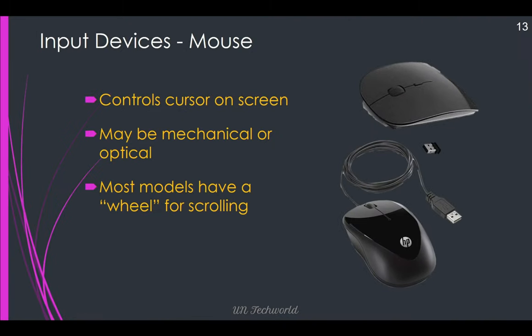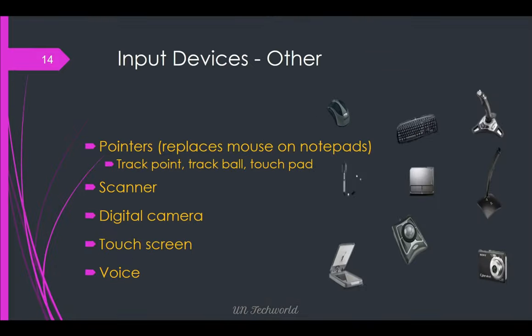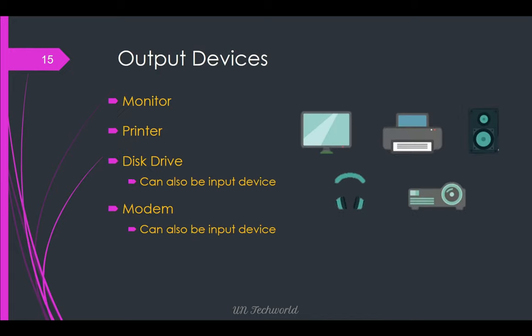Mouse controls the cursor on screen, may be mechanical or optical, most models have a wheel for scrolling, and nowadays we are using wireless mouse also. Other input devices include pointer — replaces mouse on notepads — trackpoint, trackball, touchpad, scanner to scan copies of your documents and images. Digital camera to take photos and videos. Touch screen, like a mobile phone, is one of the simplest examples. Voice mic or voice controllers.